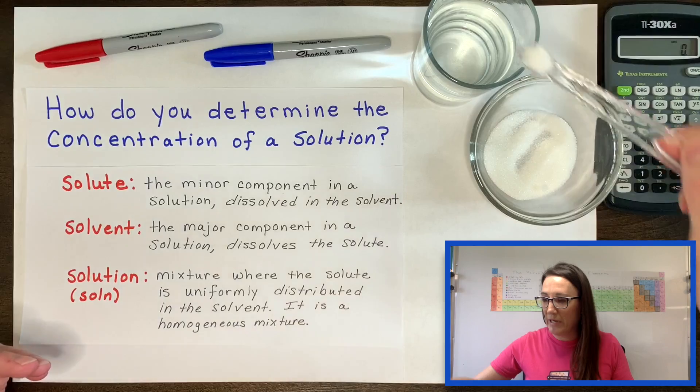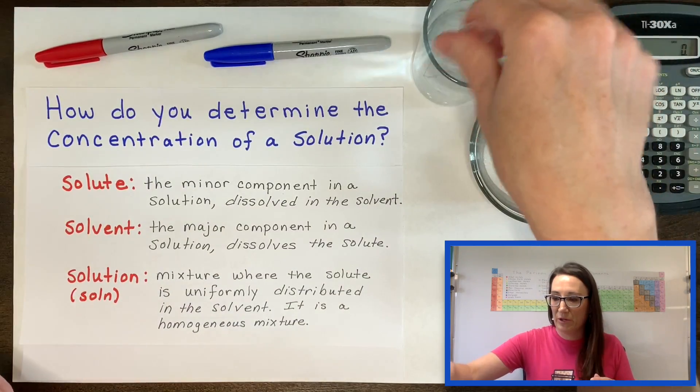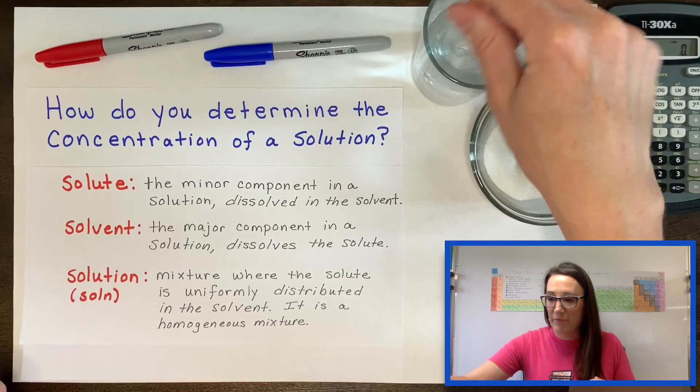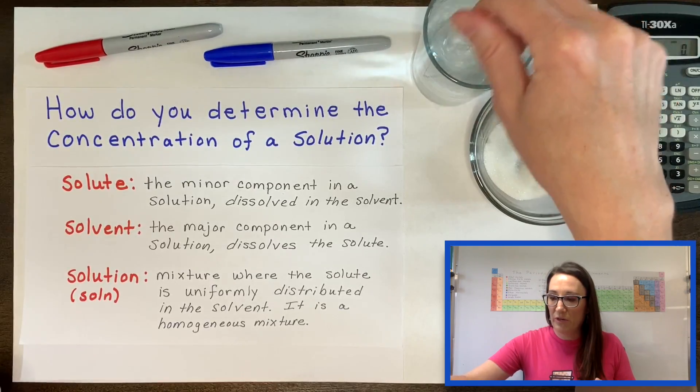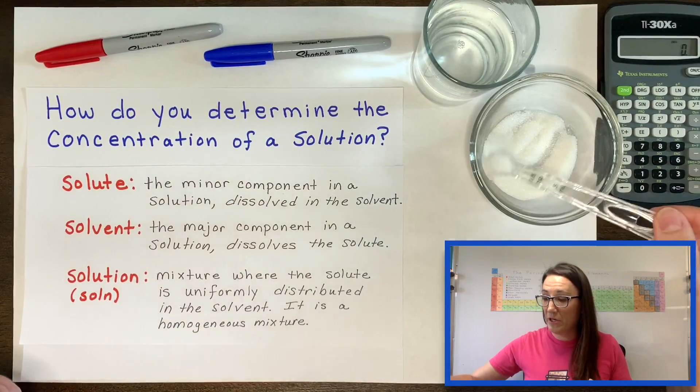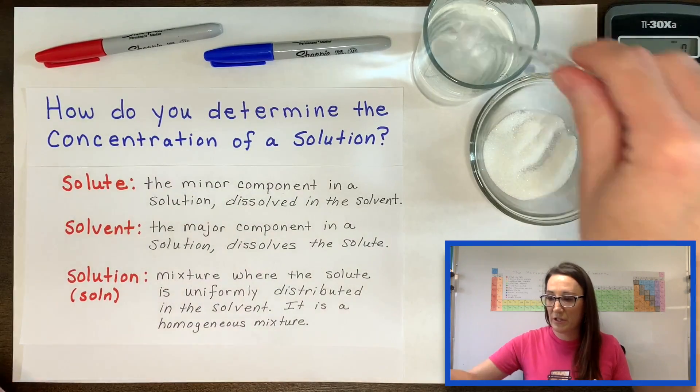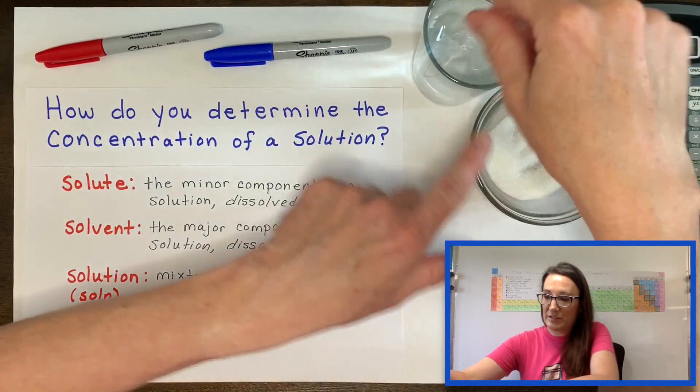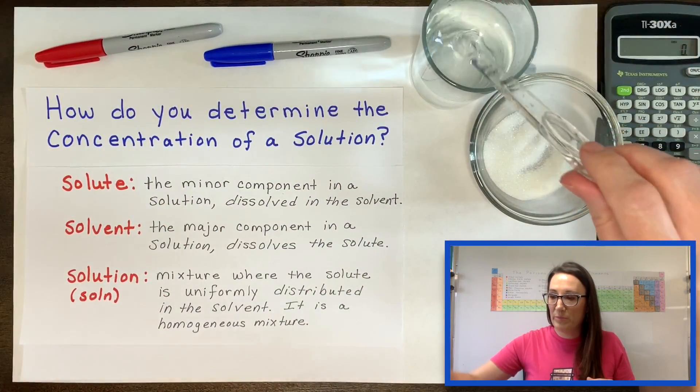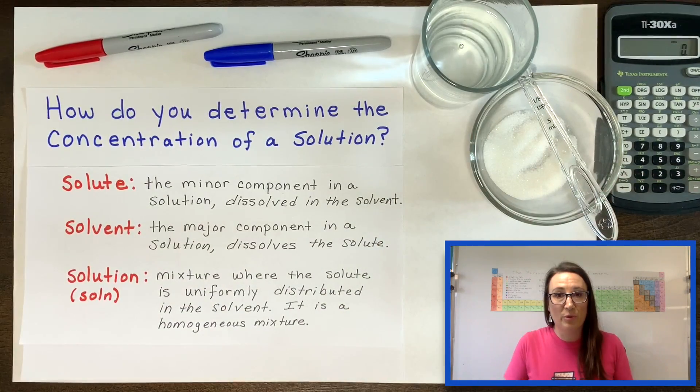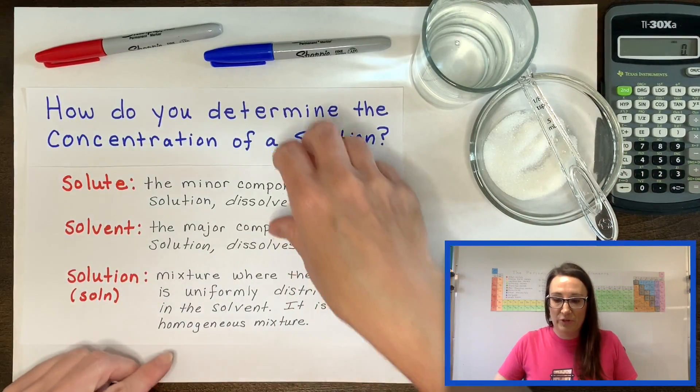If I add more salt or sugar, another scoop, I now have made the same volume but I've made it more concentrated. What if I had the ability to mass out another scoop, weigh it, put it into this solvent and dissolve it? What would be the concentration of my solution at this point? That's what we're going to learn in this video.